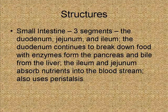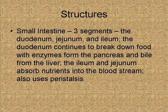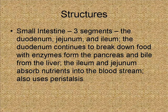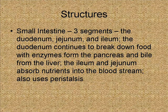After the stomach, the ingested food or liquids go into the small intestine. There are three segments to the small intestine: the duodenum, the jejunum, and the ileum. The duodenum continues the process of breaking down food, using enzymes secreted by the pancreas and bile created by the liver. The ileum and jejunum absorb all the nutrients that have been broken down and get those nutrients into the bloodstream to be carried throughout the body. The small intestine uses peristalsis to continue moving food and waste through the system.